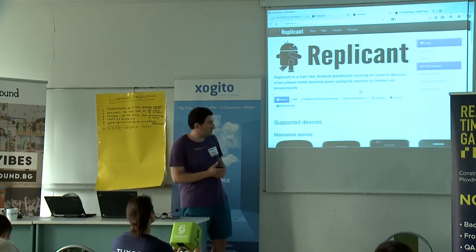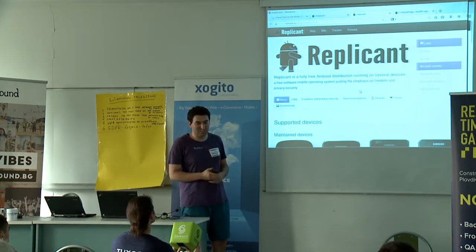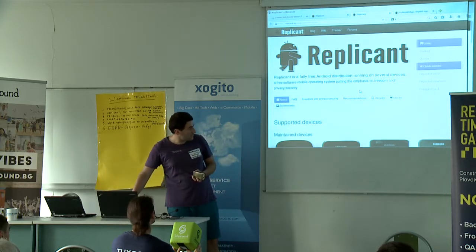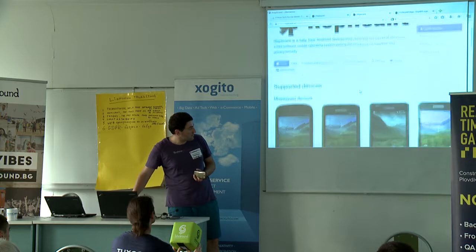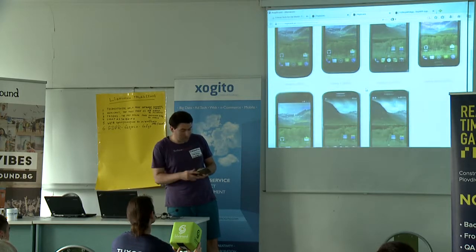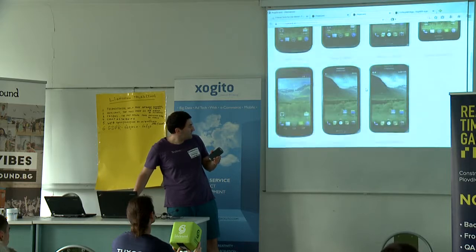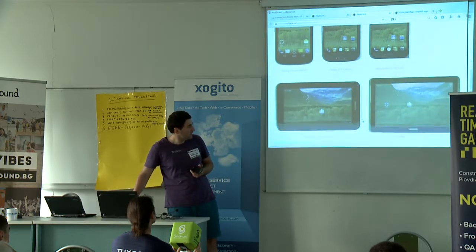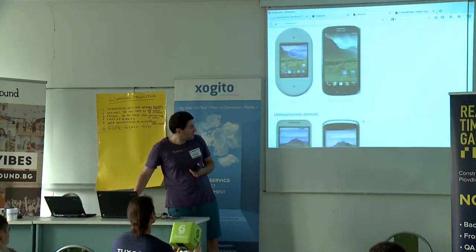So if you want to have a completely free main operating system on your phone — because a phone has some other operating systems in sub-devices such as the modem — you should have one of the compatible phones. There is a list of compatible phones on replicant.us. One of the compatible phones is the phone I have. It's a Galaxy S3, the i9300 model, because there are some more versions of the S3 with different hardware inside. There are also some tablets that are compatible.